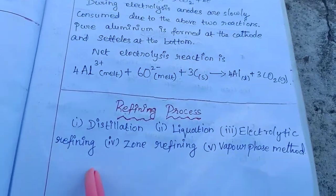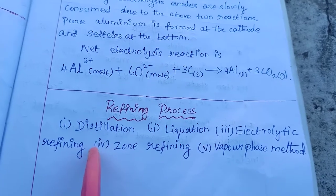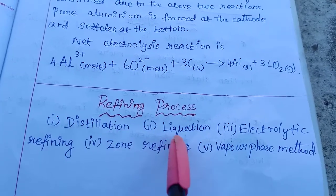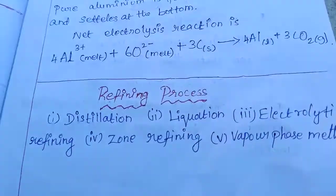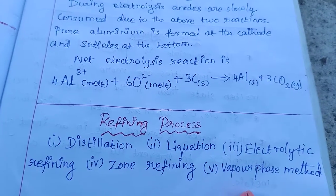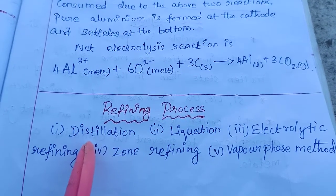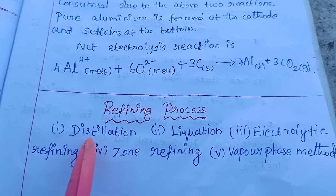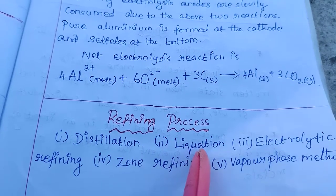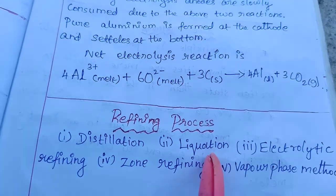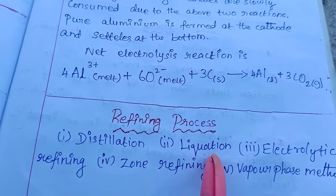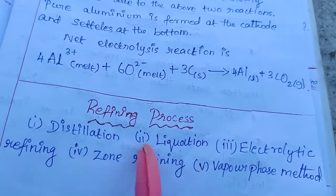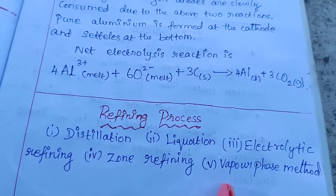Next we will see the refining processes. There are five types: distillation for separating volatile from non-volatile metals, liquation for separating high melting point from low melting point metals, electrolytic refining, zone refining, and vapor phase method.